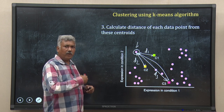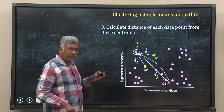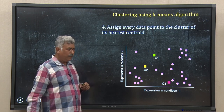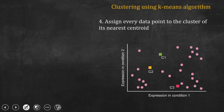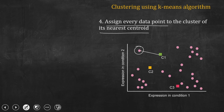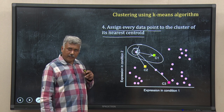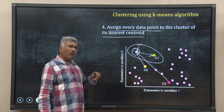Once you have done the same thing for all 25 or 26 data points, the fourth step is to assign every data point to the cluster of its nearest centroid. For example, for this data point I know the distance from c1, c2 and c3. You can easily see that c1 is the closest, so I will assign this data point to the cluster of c1 — that is cluster 1. I do the same thing for all data points.